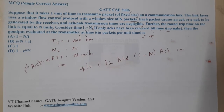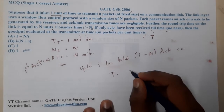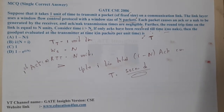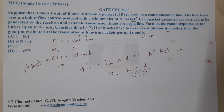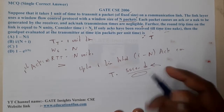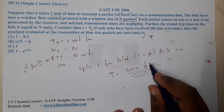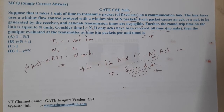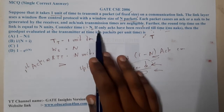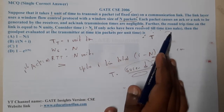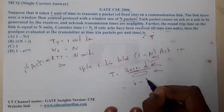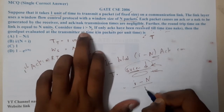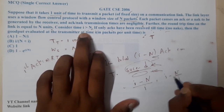Throughput, or goodput, is the number of successful deliveries divided by the total time taken. The number of successful receives is i minus N (since the first N units are spent before any ACK arrives), and the total time is i units. So the goodput is (i minus N) divided by i, which equals 1 minus N/i.